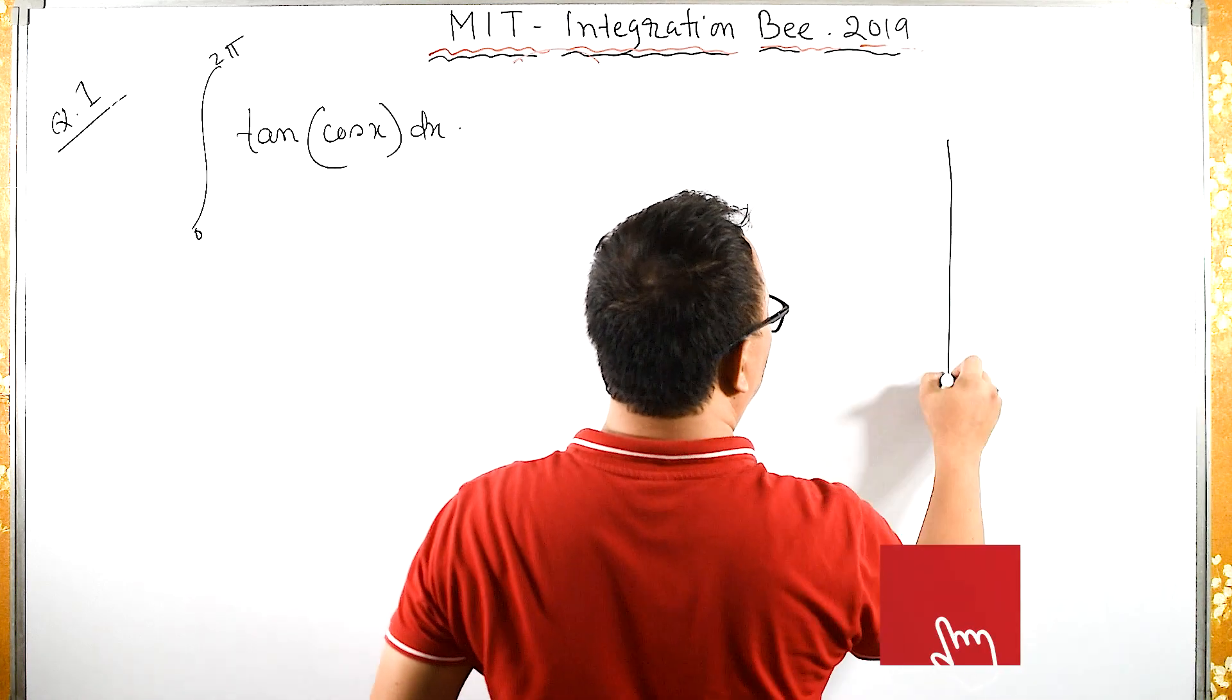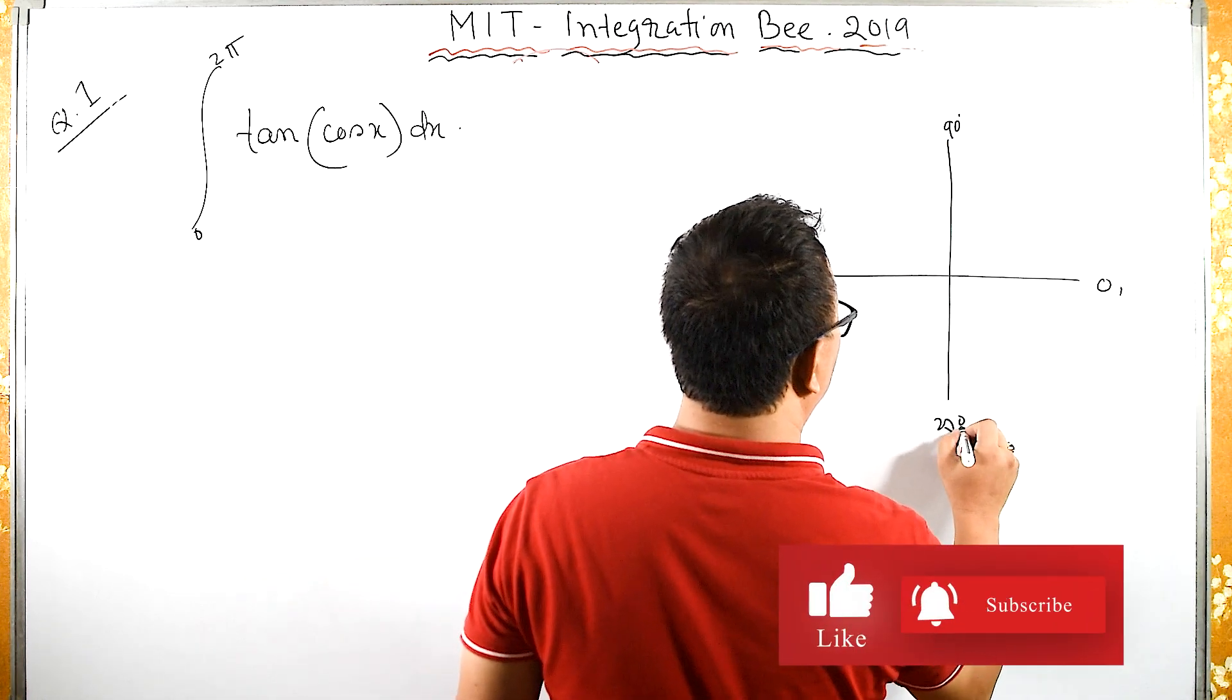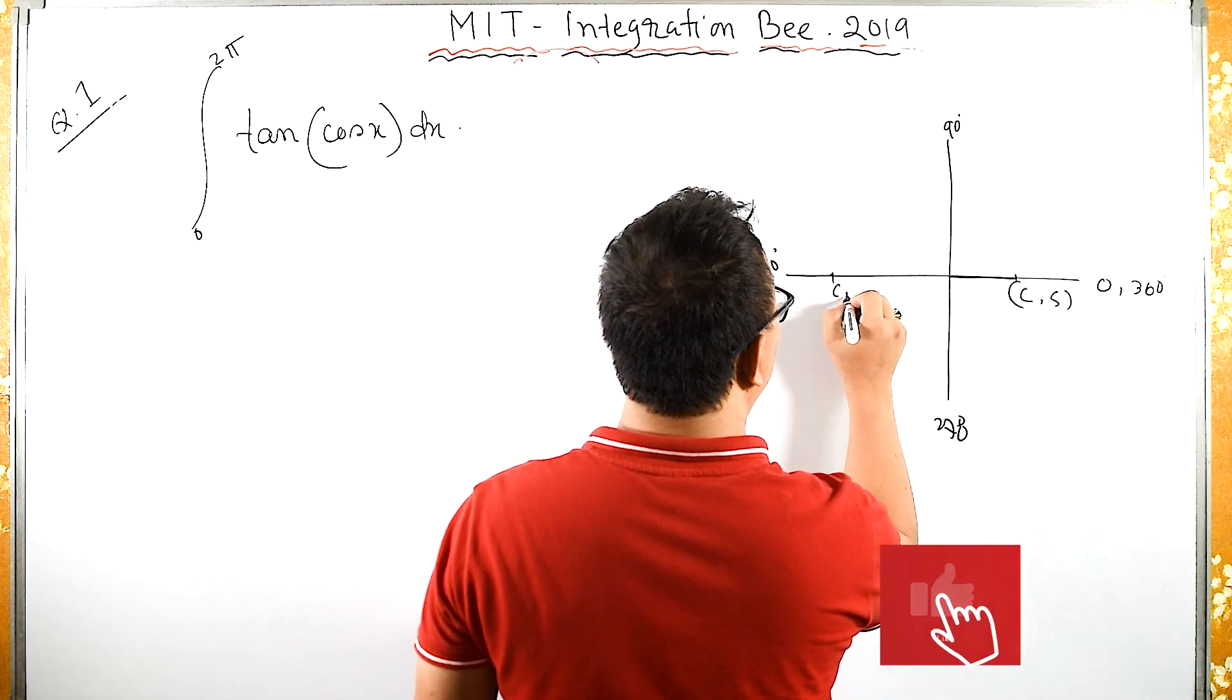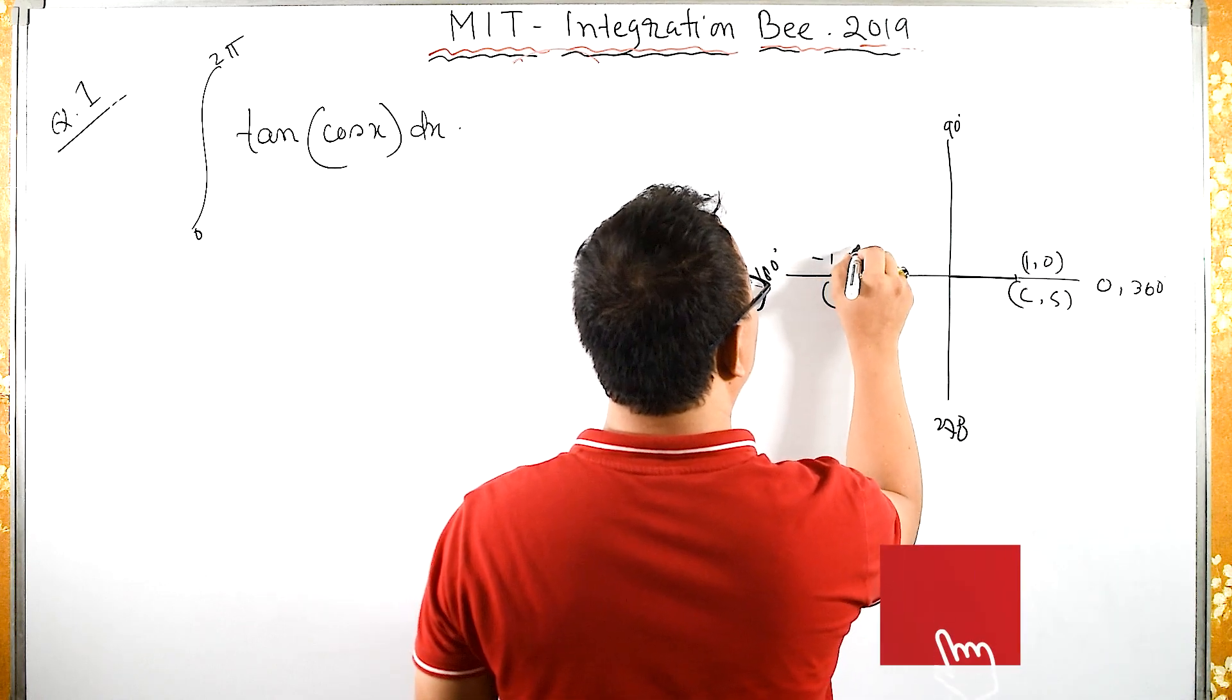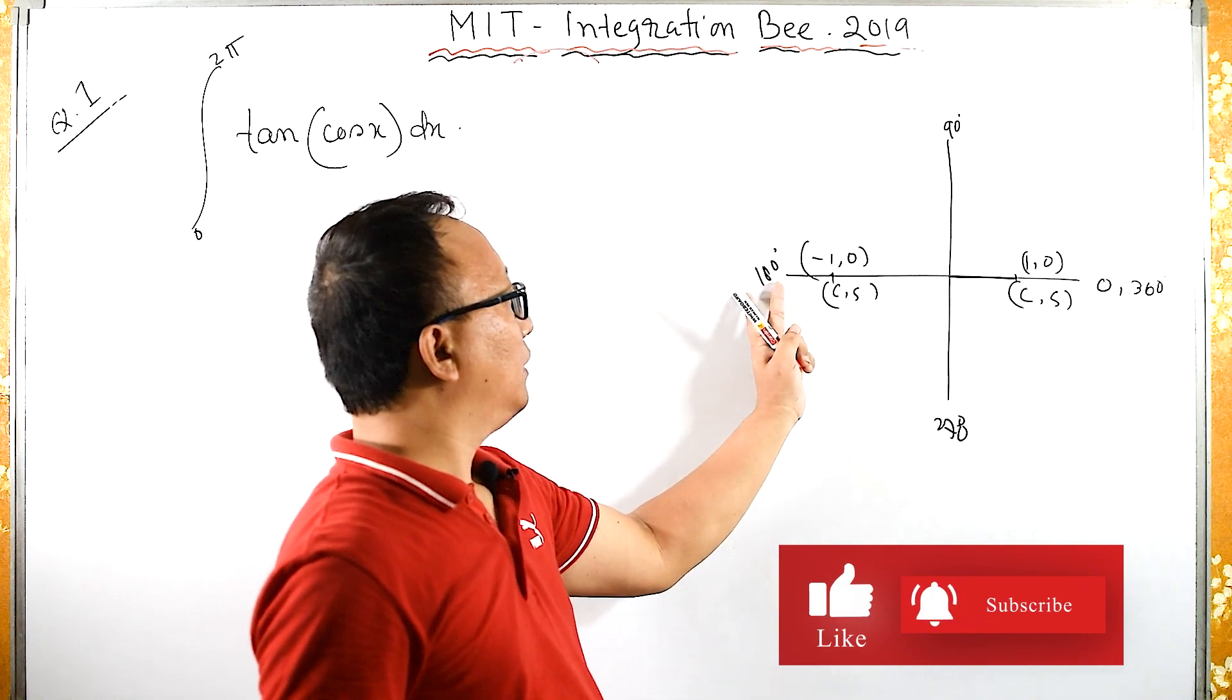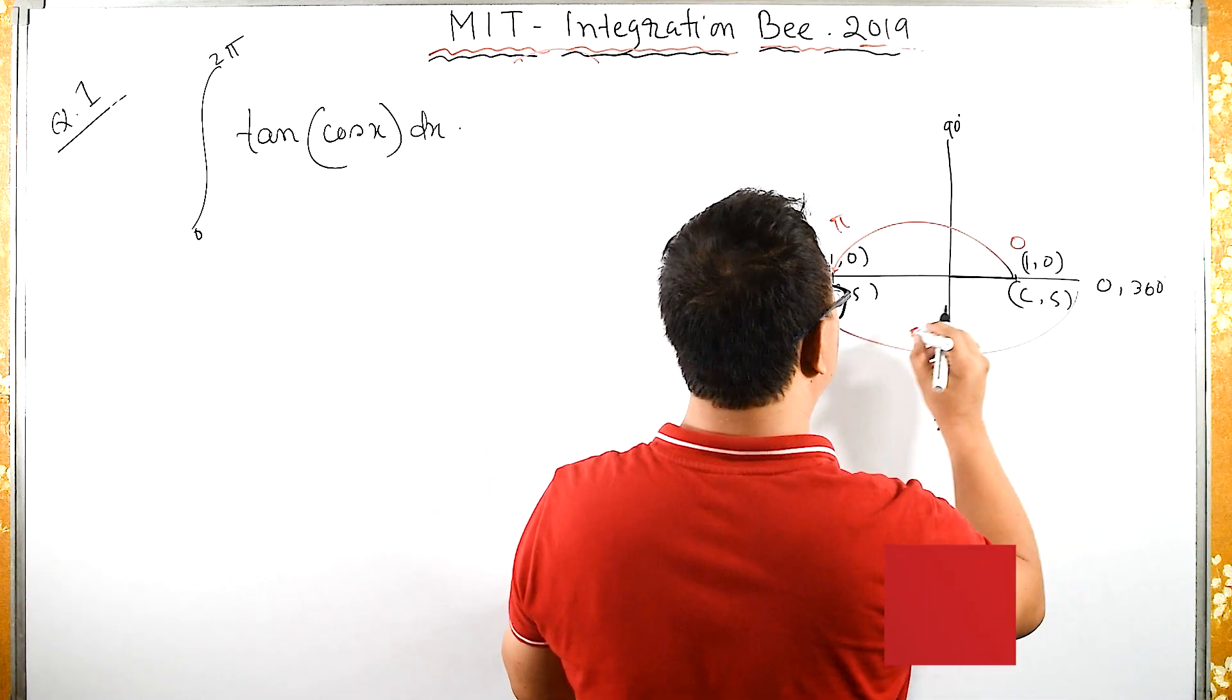If we see here: 0 degrees, 90 degrees, 180 degrees, 270 degrees, and 360 degrees. For cosine: here (1,0), here (-1,0). This means cos(0°) = 1 and cos(360°) = 1. Similarly, cos(180°) = -1. From here to here is 0 to π, and from here to here is π to 2π.